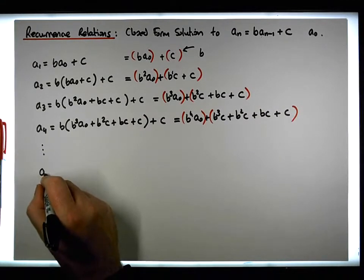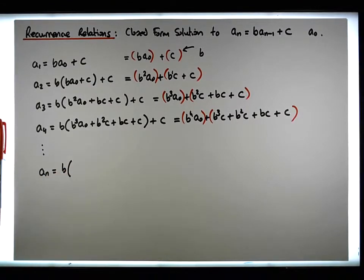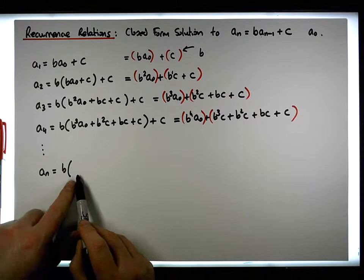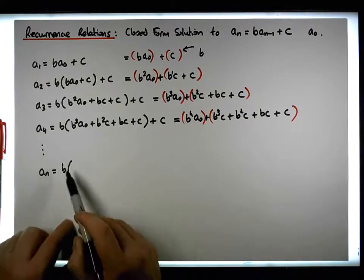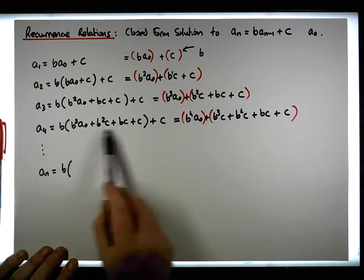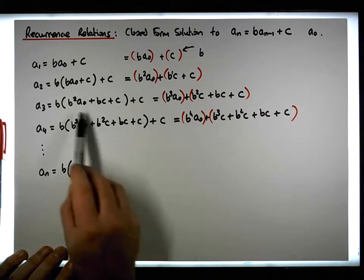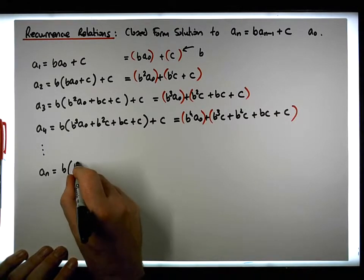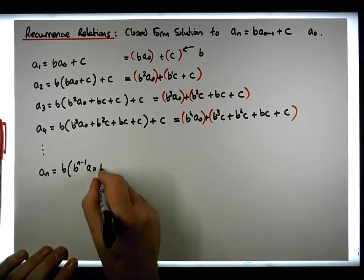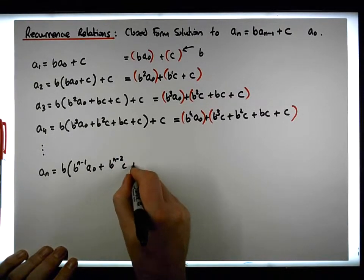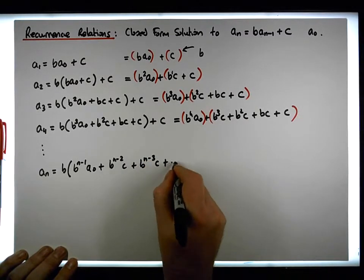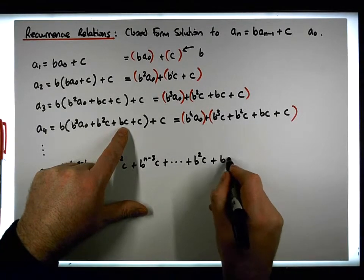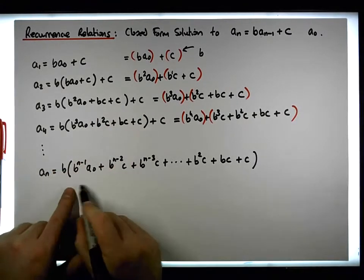The nth term, a_n, is going to be equal to b times the previous polynomial. So a_n equals b to the n minus 1 times a0, plus b to the n minus 2 times c, plus b to the n minus 3 times c, plus all the way down — we're going to have a b-squared term times c, a b times c, and also the c. That's the expansion of the nth term.